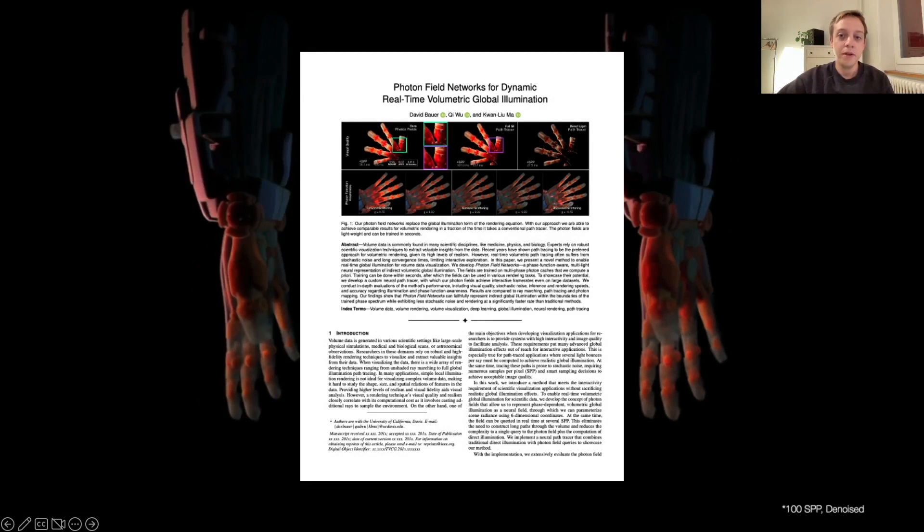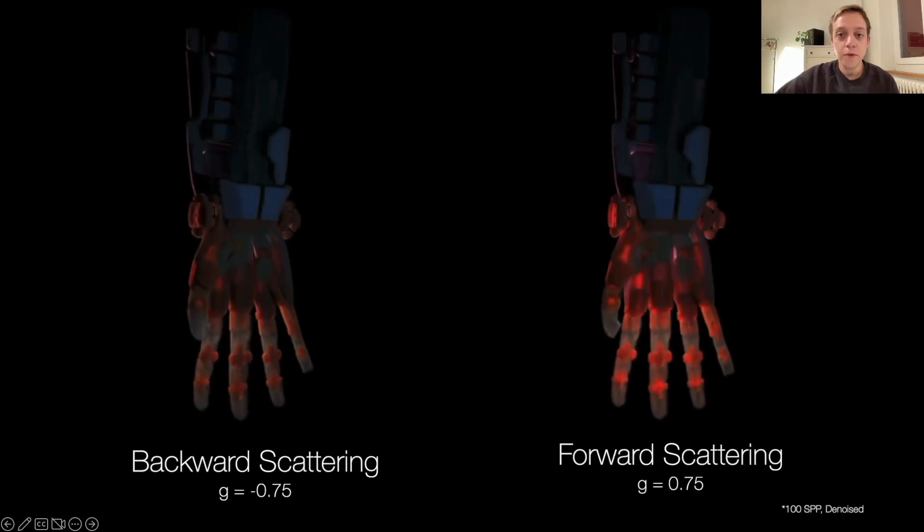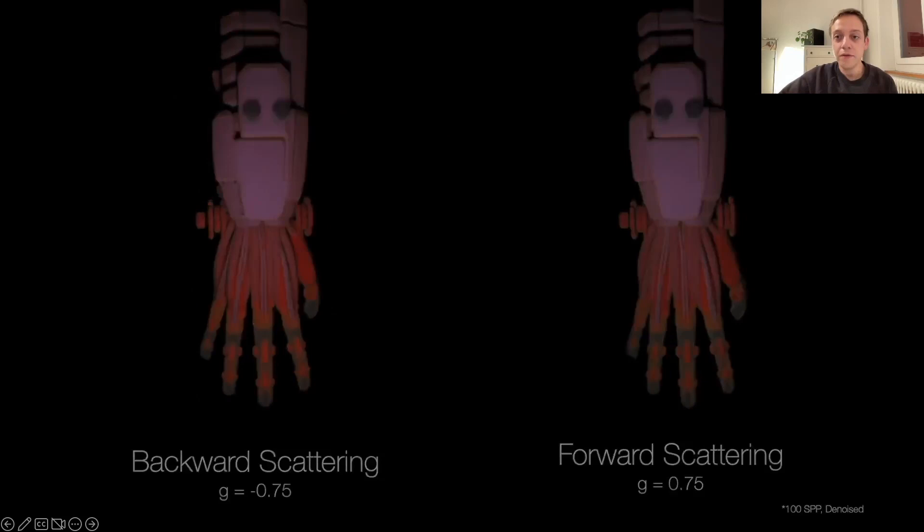And here we see an example of what this method can do. These two views of a volumetric scan have been rendered with our technique and the global illumination effects in these shots are realized using our photon field technique. In this demo, you can also see that we support non-isotropic scattering effects. And those are baked right into the neural representation and can be changed in real time.